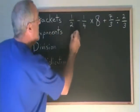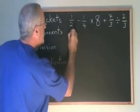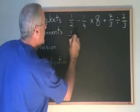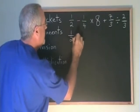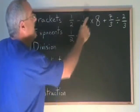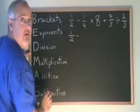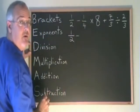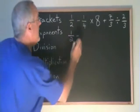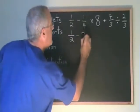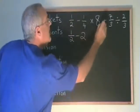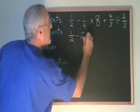So I'm going to copy down the rest of the problem. In the place of the multiplication, I'm going to put the answer. 1 quarter times 8 is 2. And then copy down the rest.